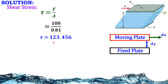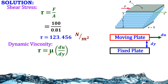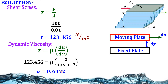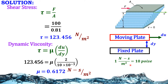Substituting, we get shear stress tau = 123.456 N/m². Next, dynamic viscosity: tau = mu × (du/dy). Substituting the values of tau, du, and dy, we get mu = 0.6172 N·s/m². To convert dynamic viscosity to poise, we know 1 N·s/m² = 10 poise. Therefore mu = 6.172 poise.